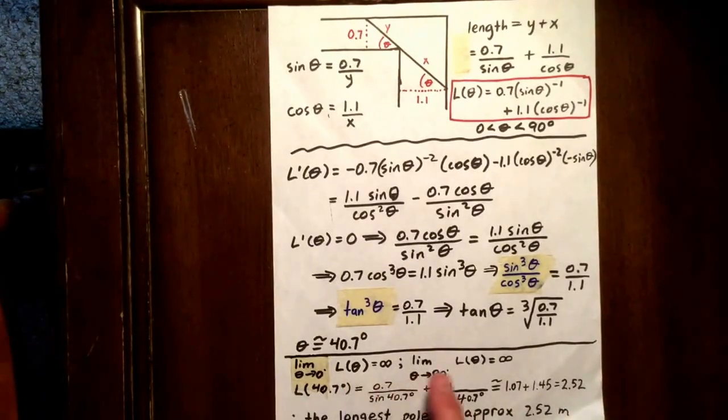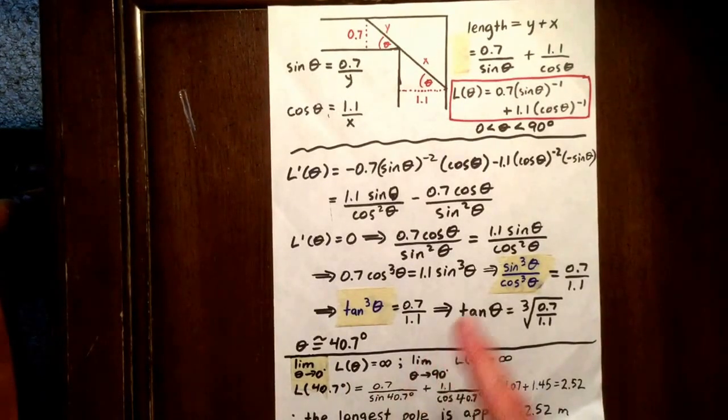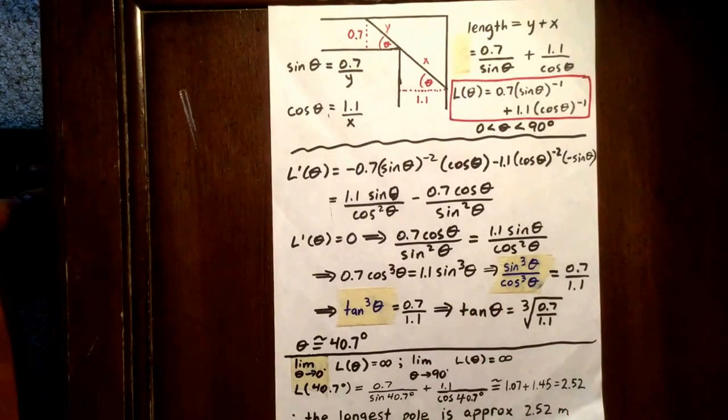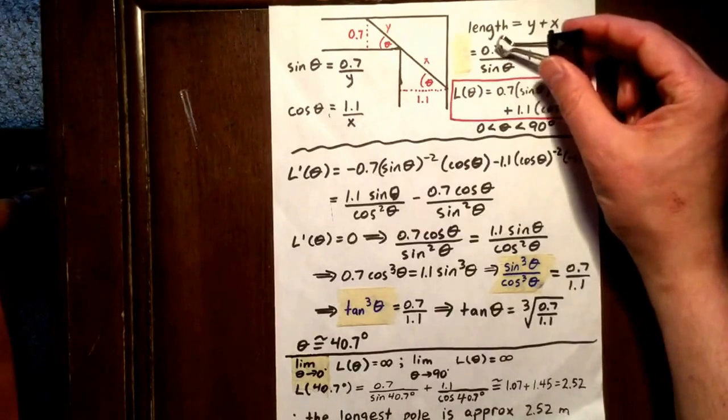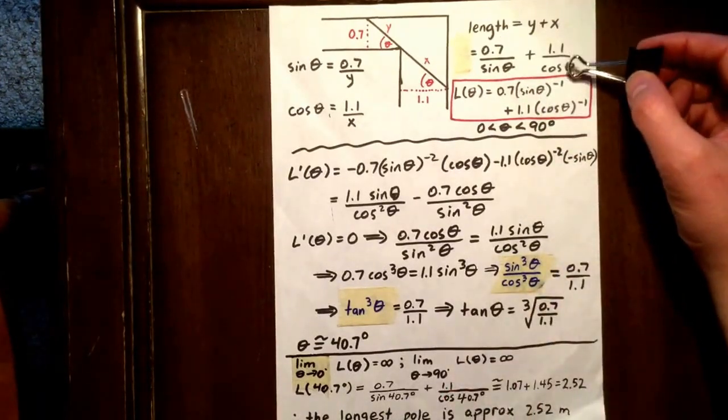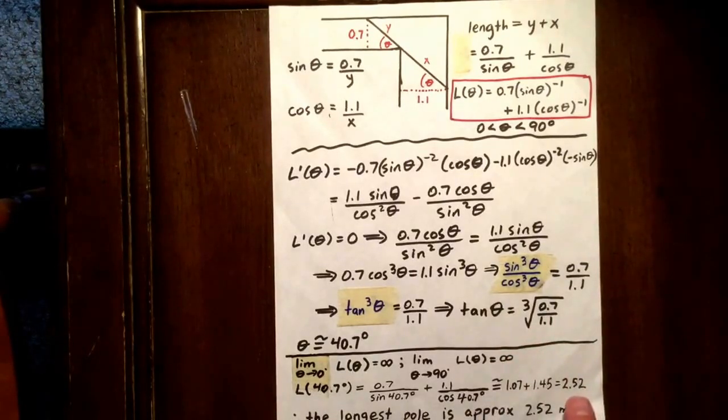Both of these are not our minimums. But if we plug in 40.7, we're in business. If we plug in 40.7, we have 0.7 over the sine of 40.7 plus 1.1 over the cos of 40.7. And that is approximately equal to 2.52.